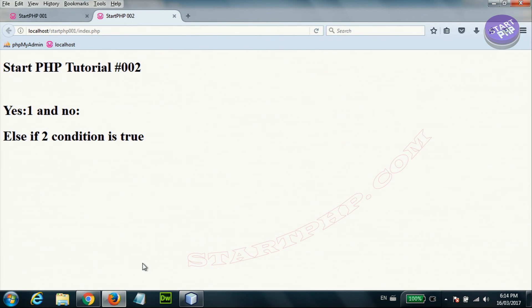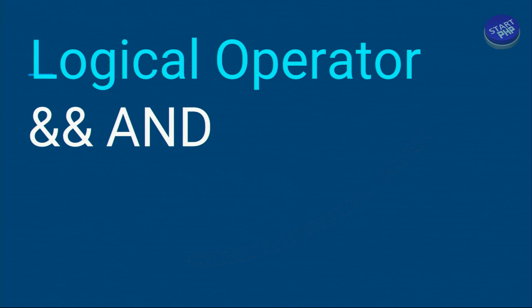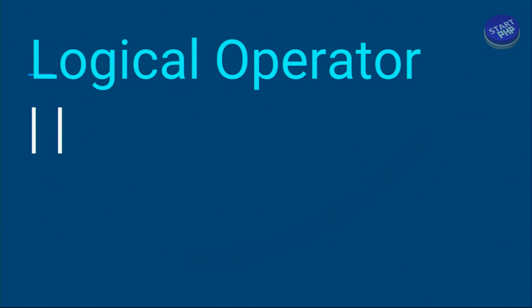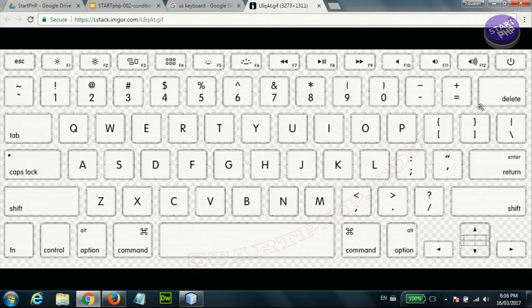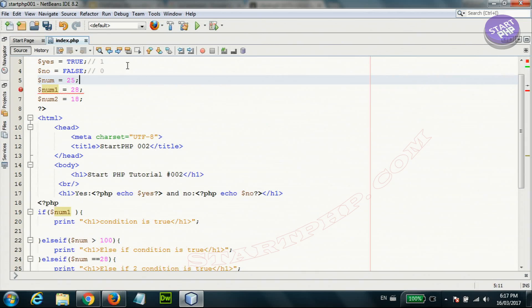Now let's look at logical operators. We have double ampersand '&&', which is equivalent to 'AND' — in PHP you can write either one. We also have two vertical bars '||', which represents OR. On a US keyboard, the pipe symbol is above the Enter key.